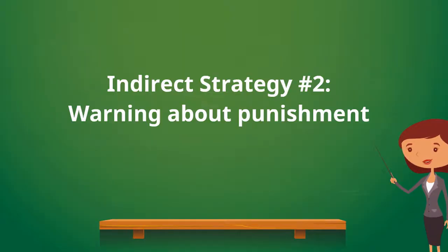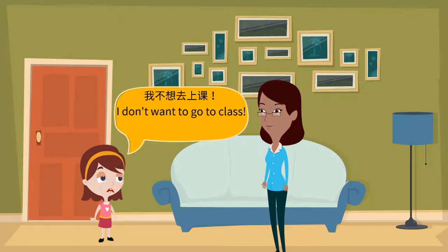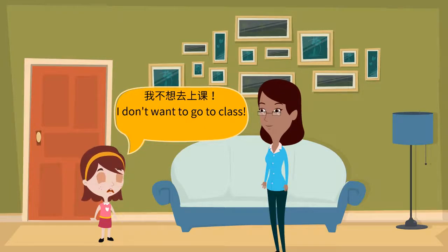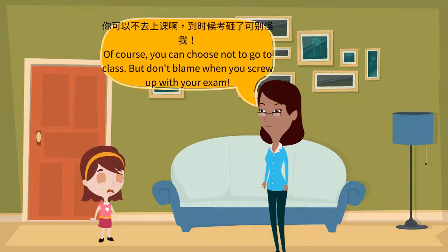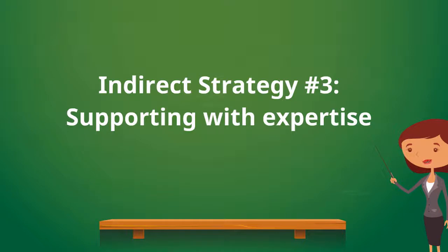The second strategy is warning about punishment. To persuade, you can tie the unfavorable consequences with the case when others don't follow your advice. Example: 我不想去上课。 你可以不去上课啊，到时候考砸了，可别怪我。